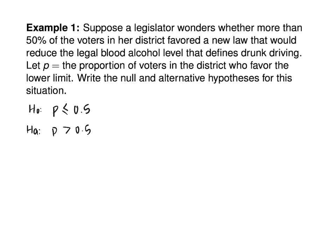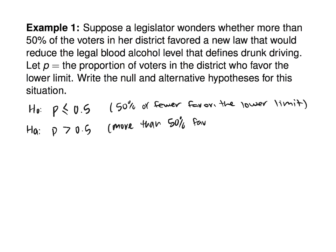In words, H-naught is saying that 50% or fewer favor the lower limit, and H-A says more than 50% favor the lower limit. The question you'll be able to answer today is: if you conduct a survey and get a sample proportion, is this sample proportion different enough from 0.5 to conclude that yes, people do support the lower limit.